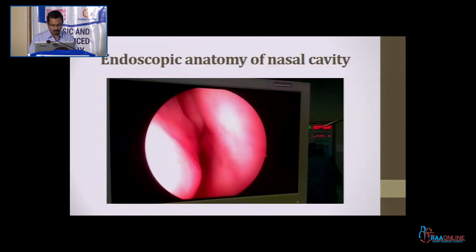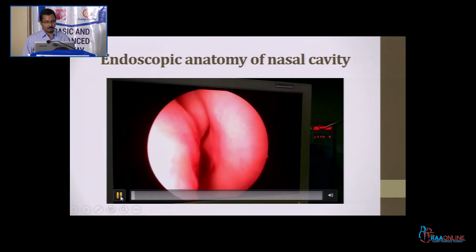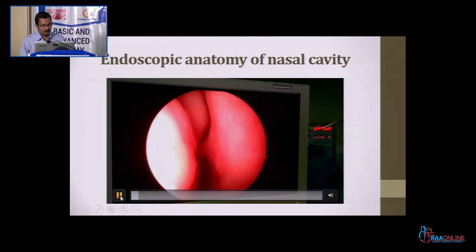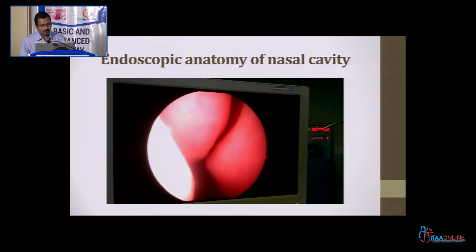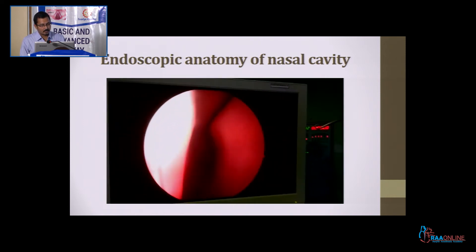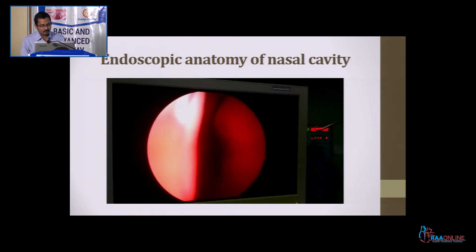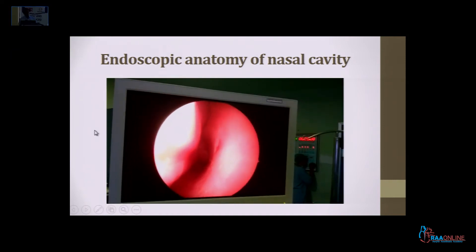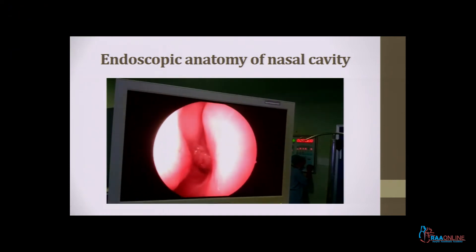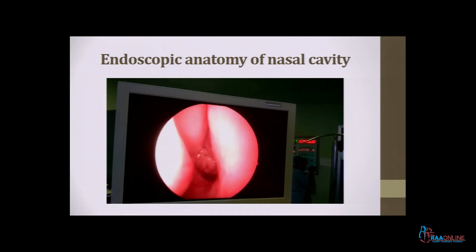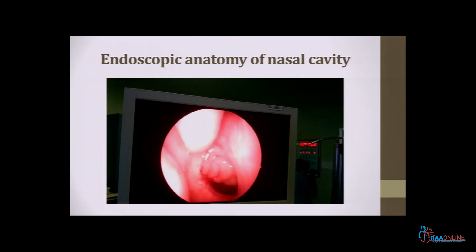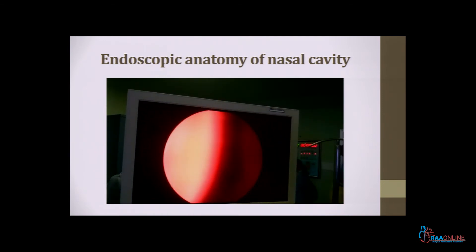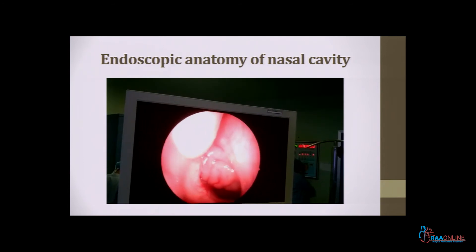This video demonstrates the endoscopic anatomy showing where the splenopalatine ganglion lies. This is a patient under general anesthesia during nasal endoscopy. You can see the middle and lower turbinate; the space between the middle turbinate and the inferior turbinate contains the structure that is the splenopalatine ganglion.